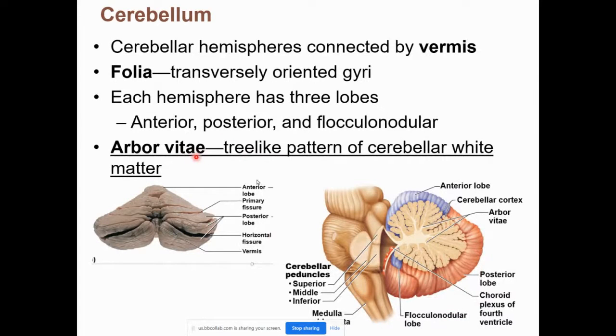The cerebellum means 'little brain.' Key words: coordinated movements, smooth movements — it calculates how to smoothly coordinate muscle contraction, helping with balance and coordination. The arborvitae, which we know from lab, is the white matter inside the cerebellum.